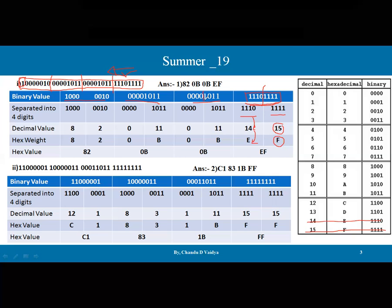For the second octet, the value 1 0 0 1 0 1 1 is equivalent to decimal 11, and 11 in hexadecimal is B. Going to the third octet, 1 0 1 1 1 0 1 1 is also equivalent to 11, so that is also B. Combining all calculated octet values, the final IP address in hexadecimal is 82.0B.0B.EF.